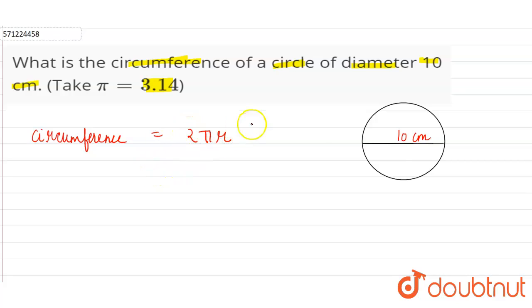And we have given the diameter of the circle. For example, diameter is given 10 cm and we know that diameter is twice the radius, right? Diameter is twice the radius.